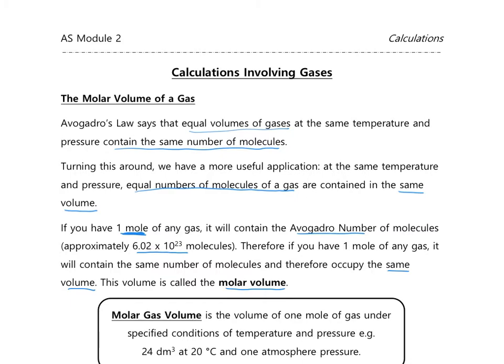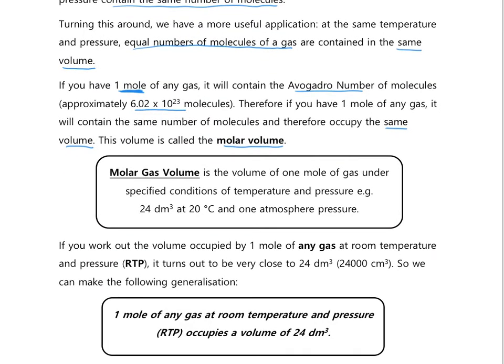The molar gas volume is defined as the volume of one mole of gas under specified conditions of temperature and pressure, because the volume will vary if you change temperature or pressure. Obviously, if you increase the pressure, that's going to decrease the volume the gas takes up, so you have to specify particular conditions.